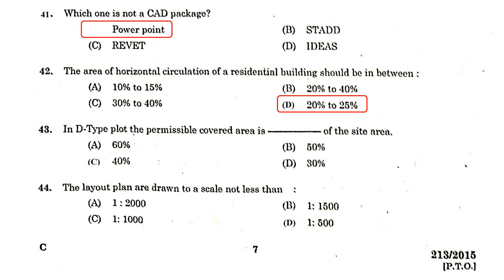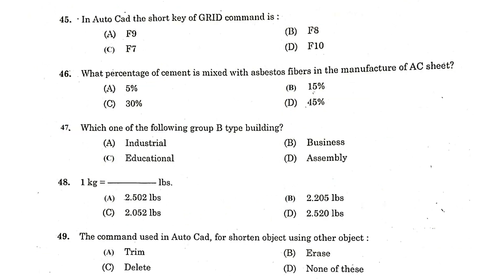In a D-type plot, the permissible covered area is 40 percent of the site area. The layout plans are drawn to a scale not less than 1:500. In AutoCAD, the shortcut key for the grid command is F7.